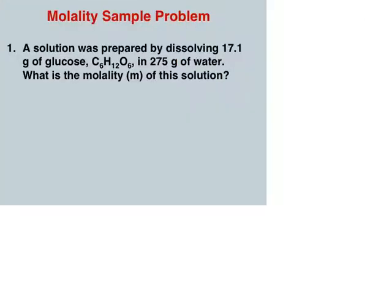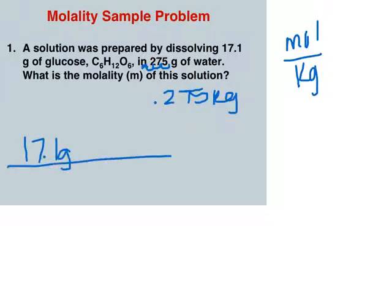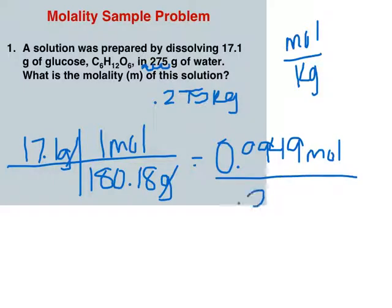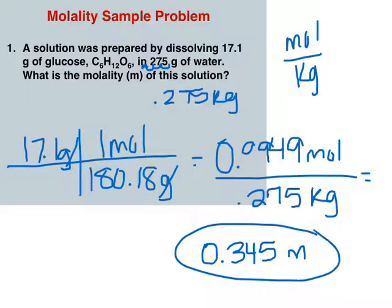Alright. Here's our practice problem for molality. So, here, you've got 17.1 grams of glucose and 275 grams of water. But, we need moles over kilograms. So, here, I'm going to change this grams to kilograms by moving my decimal back. And, then, I'm going to change 17.1 grams over to moles. And, every mole of glucose, just trust me, has 180.18 grams. So, when I divide there, my moles are 0.0949 moles. And, divide that by 0.275 kilograms, you get 0.345 molal. Okay. Sorry, this is so fast.